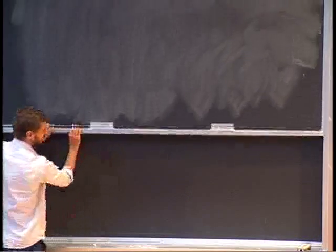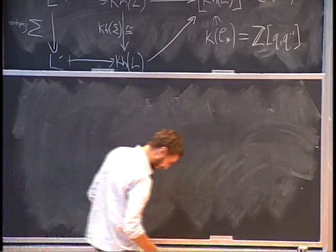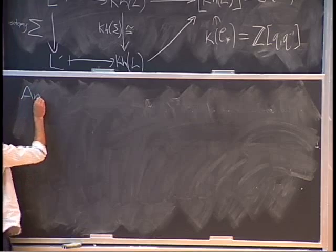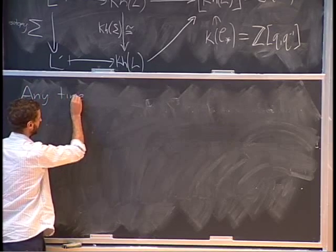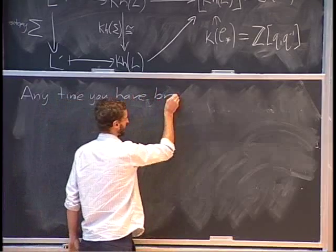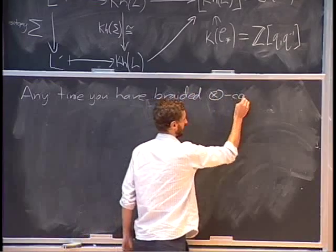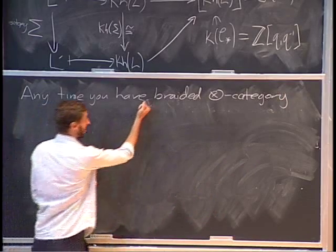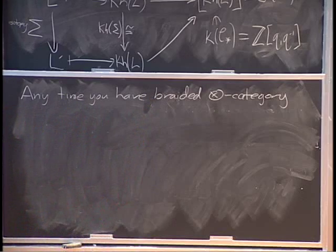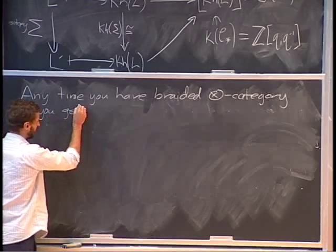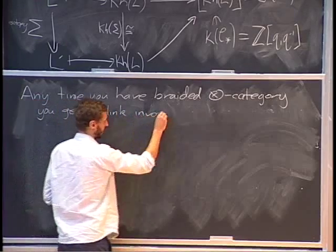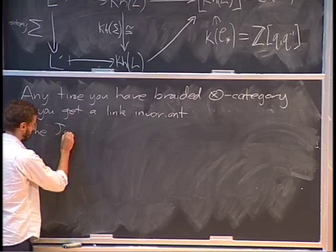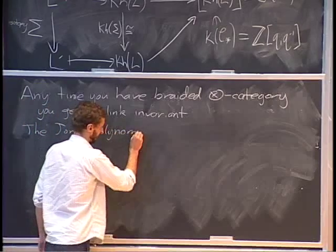So I'm going to spend a few minutes now talking about the Jones polynomial, more or less. The point I want to make is that any time you have a braided tensor category — I'm not actually going to bother saying exactly what a braided tensor category is; for those who know, you already know; for those who don't, it's better to just look at the example I'll show you next — any time you have a braided tensor category, you get a link invariant right away. And the Jones polynomial is an example.